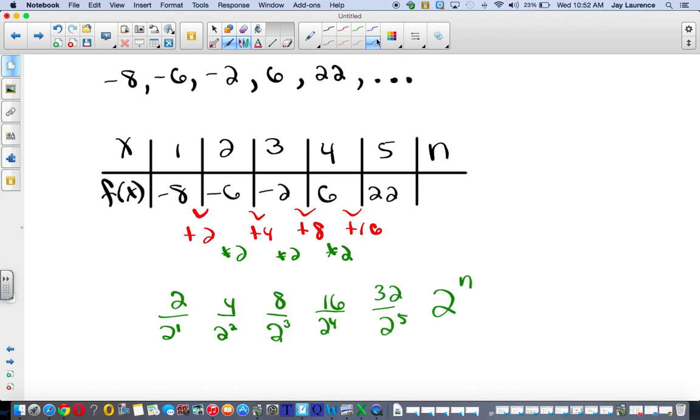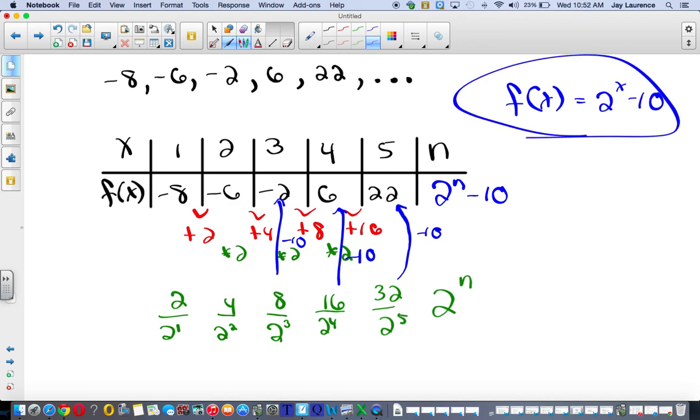So how do I turn these green ones into the black ones? Well, 32 to 22, I have to take away 10. 16 to 6, I have to take away 10. 8 minus 10, you got it, negative 2. It's take away 10. So it's 2 to the power of n minus 10. Your exponential function f of x is going to equal 2 to the power of x minus 10.